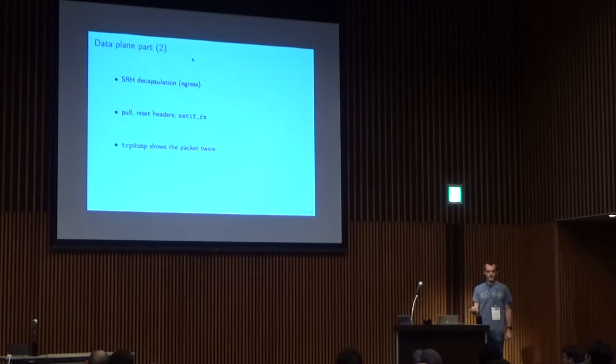For the decapsulation process, to enable a node to act as an egress node, the header is simply removed and the packet is reinserted into the interface. As segment routing is an interface-less protocol, if you tcpdump the incoming interface for a packet which is an egress node, you will see the packet twice in the incoming interface.